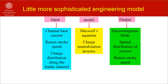It is possible to raise the level of assumptions made in engineering return stroke models as follows. One can assume as inputs the channel base current, return stroke speed, and the charge distribution along the leader channel. Combining these inputs with Maxwell's equations and charge neutralization processes in air, one can derive the electromagnetic fields as well as the spatial variation of the return stroke current with height. Note that the spatial variation of the return stroke current is a prediction and not an input in these models.